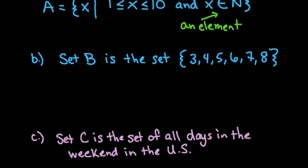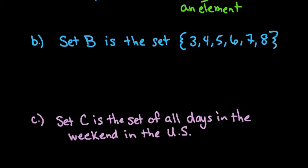And the last one - or sorry, we've got two more. The next one is set B, which is the set {3, 4, 5, 6, 7, 8}. This is in roster form. So we would just write B equals, and we would use our notation X such that - there's two ways you could write this particular one. You can say that it's greater than or equal to 3 and less than or equal to 8.